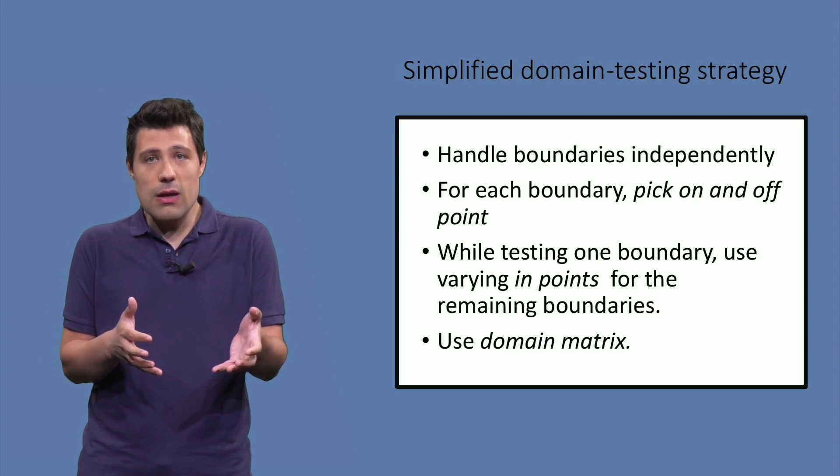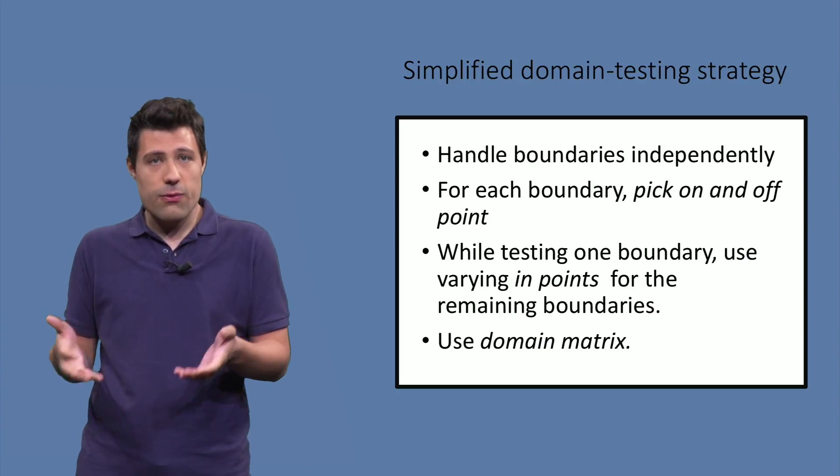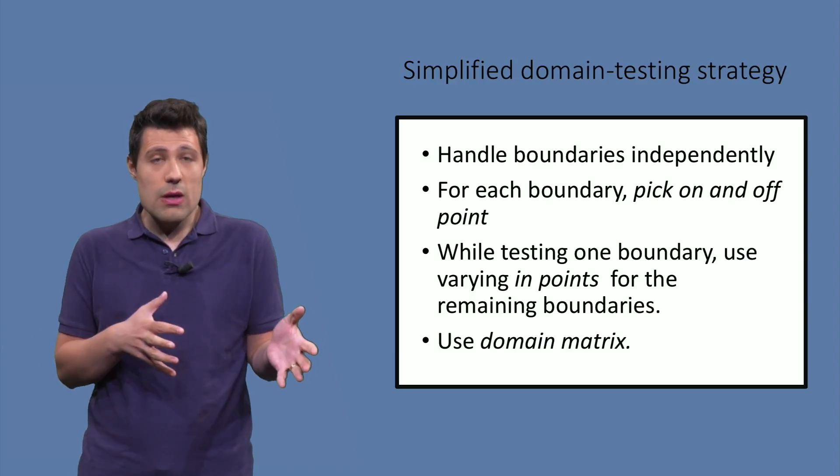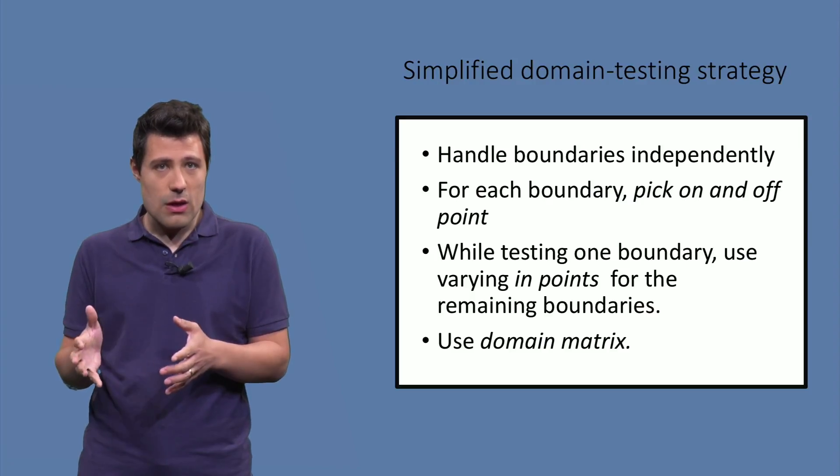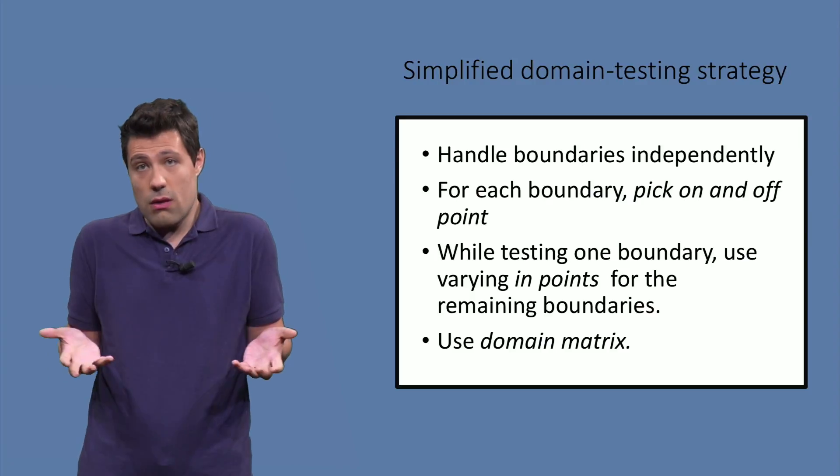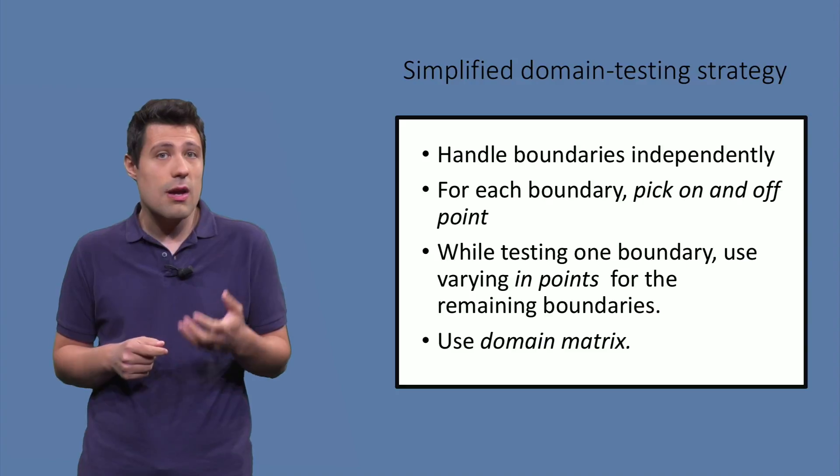And by pick, I mean testing the on and the off point for that boundary. And while testing one boundary, we use varying in points for the remaining boundaries. To really see it happening, we can use what they call a domain matrix.